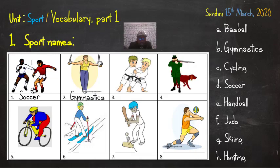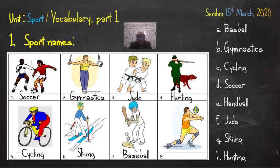Very good. That's gymnastics. Picture number three - judo. Very good. Picture four - hunting. Very good. Picture five - cycling. Yes. Picture six - skiing. Very good. Picture number seven - baseball. Very good. The last picture, number eight - handball. Very good. Let's move on.